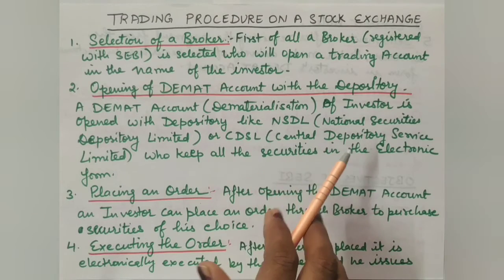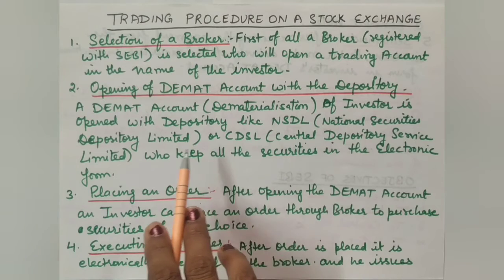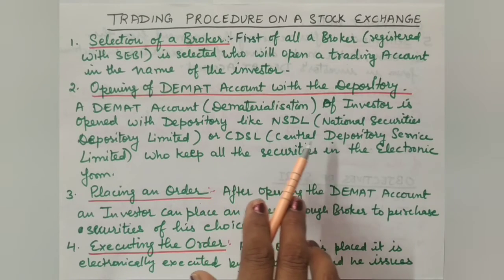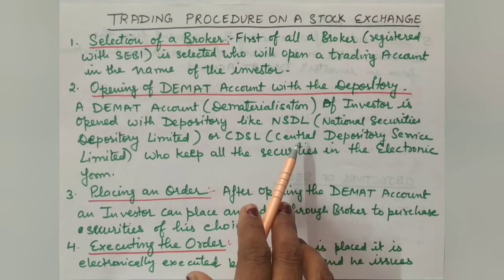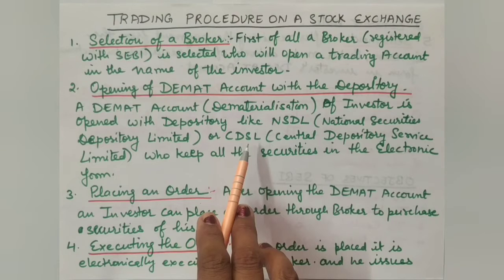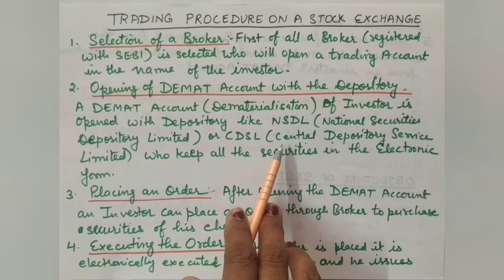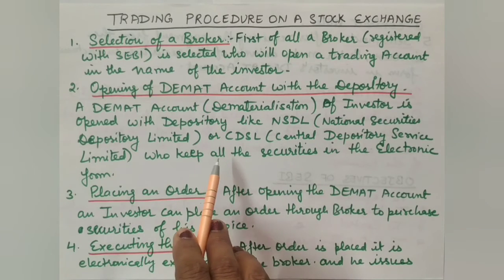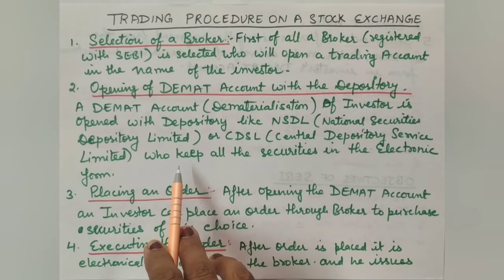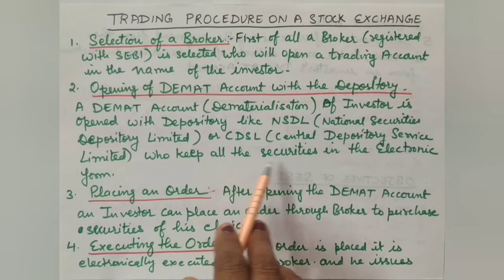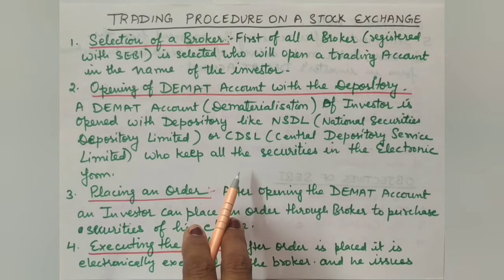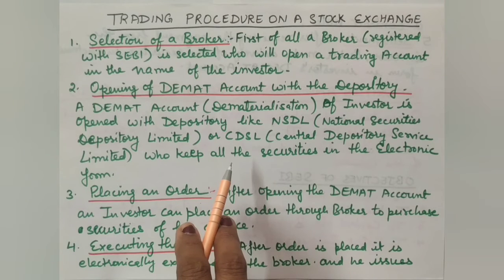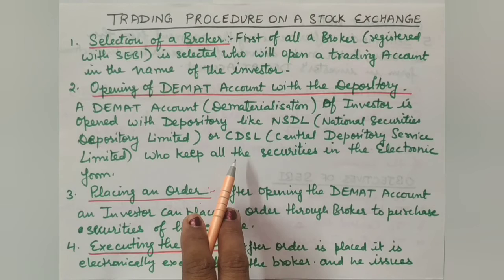The second step is opening of a DMAT account with the depositories. DMAT stands for dematerialization, meaning a paperless account for the investor opened with a depository — either NSDL (National Securities Depository Limited) or CDSL (Central Depository Services Limited), which are the two main depositories in India. These depositories keep all securities in electronic form — shares, debentures, or bonds of all listed companies are available in liquid electronic form in the DMAT account.